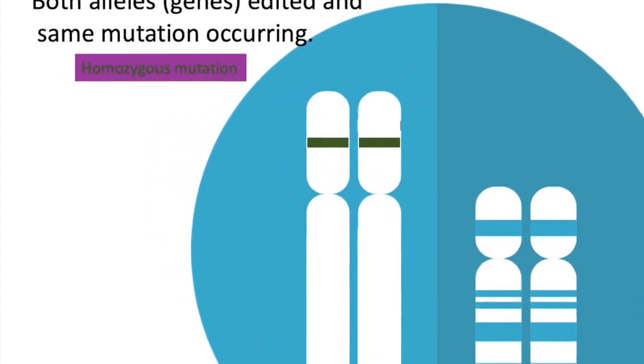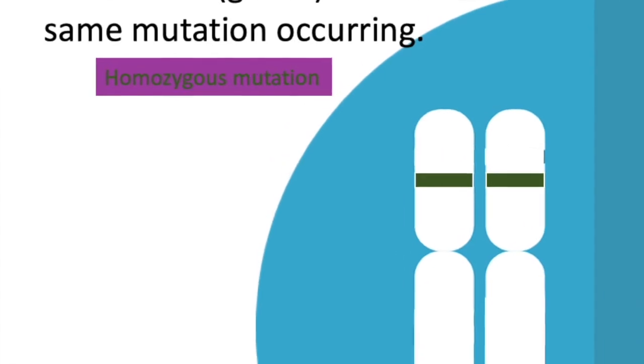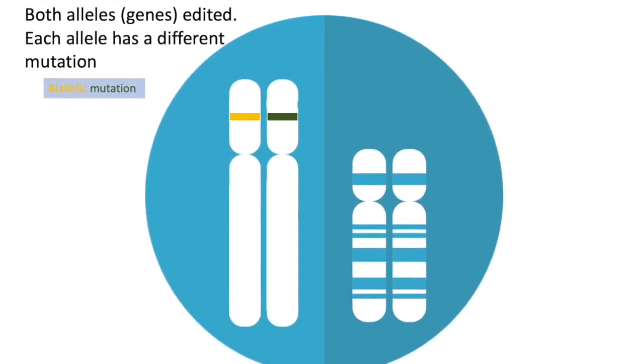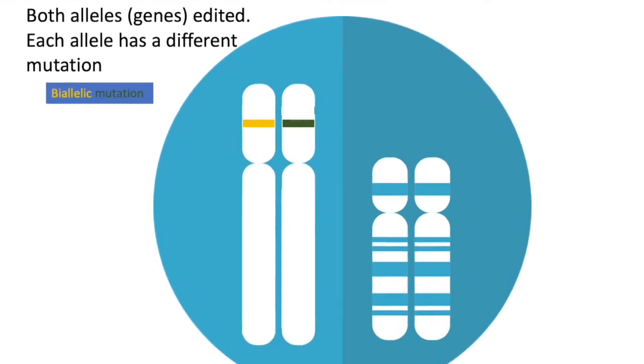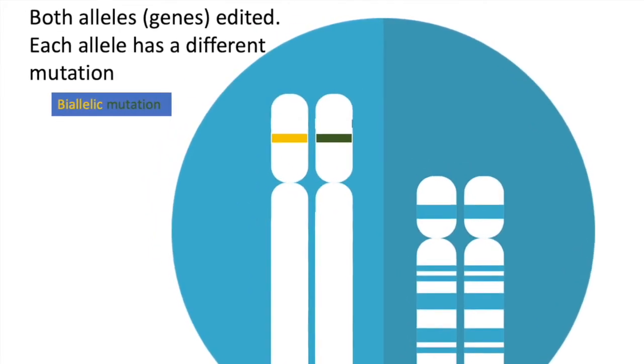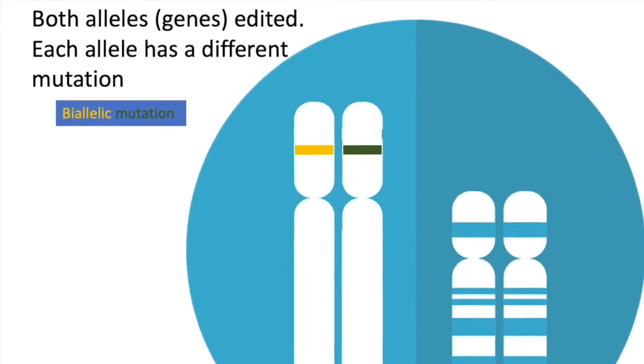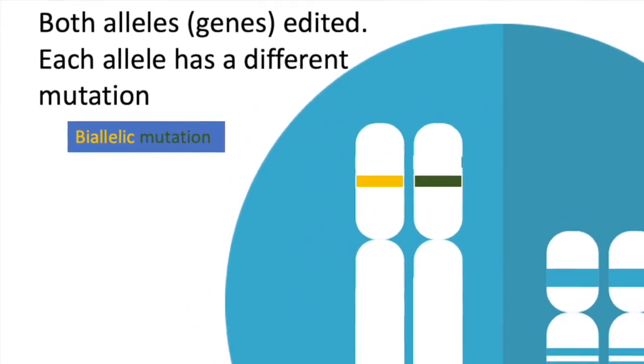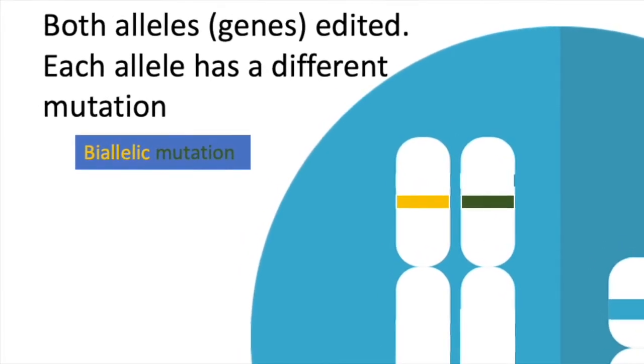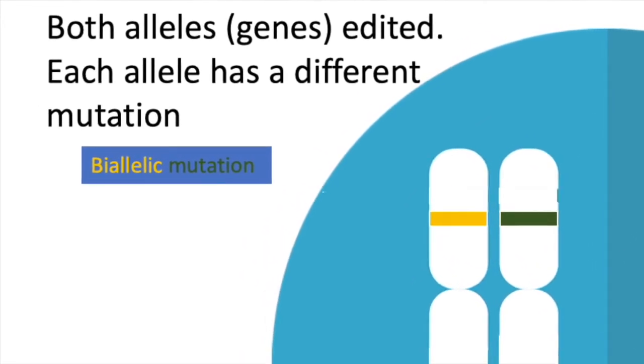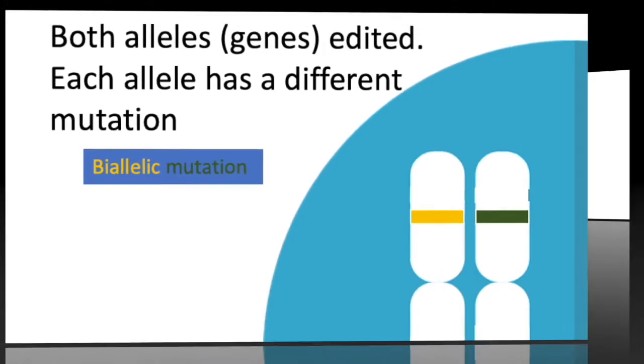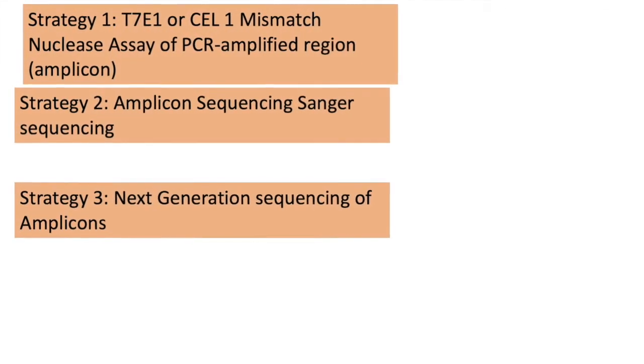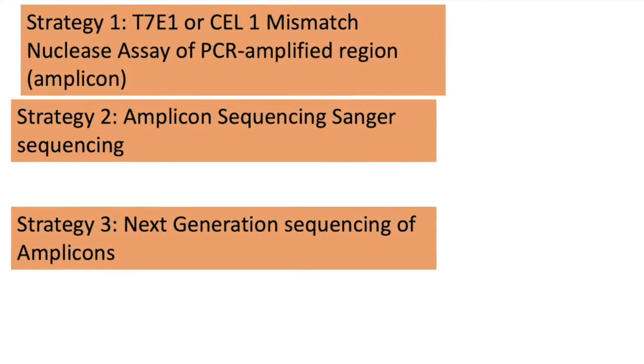Where you have both alleles edited and it's the same mutation, this is called a homozygous mutation, but where you have both alleles edited but different mutations, they're known as biallelic mutations. So you want to screen a polyclonal population of cells, if you have used cells, to check that they have a homozygous or biallelic mutation.